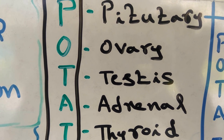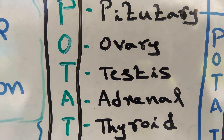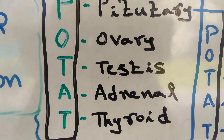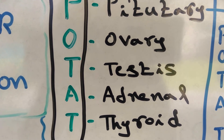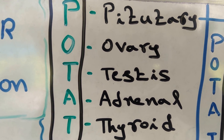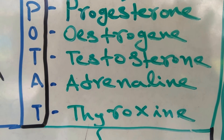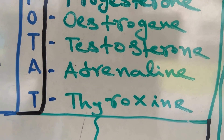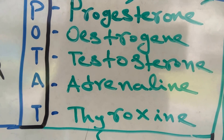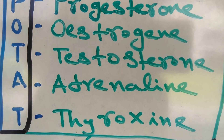The next code is POTAT for remembering endocrine glands — for 10th class students: Pituitary, Ovary, Testis, Adrenal gland, and Thyroid gland. POTAT also helps remember the hormones: P for progesterone, O for estrogen, T for testosterone, A for adrenaline, and T for thyroxine. Ovaries produce progesterone and estrogen, testis produces testosterone, adrenal gland produces adrenaline, and thyroid produces thyroxine.